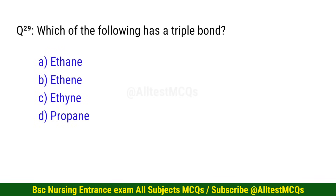Question number 29. Which of the following contains a triple bond? The correct option is C: Ethyne.